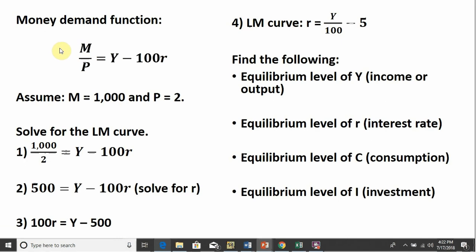So we have a money-demand function in this economy, where we have on the left-hand side the money supply M and the price level P, and that equals income minus 100R, where R again is the interest rate. We'll assume the money supply is currently at $1,000 and the price level is at 2.